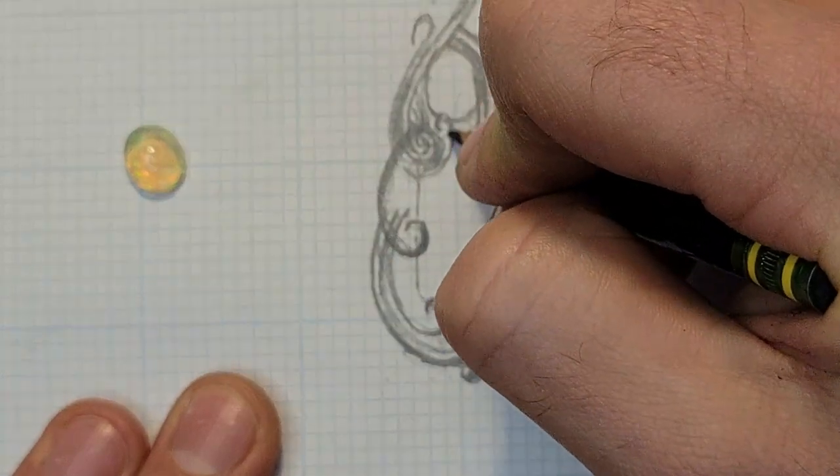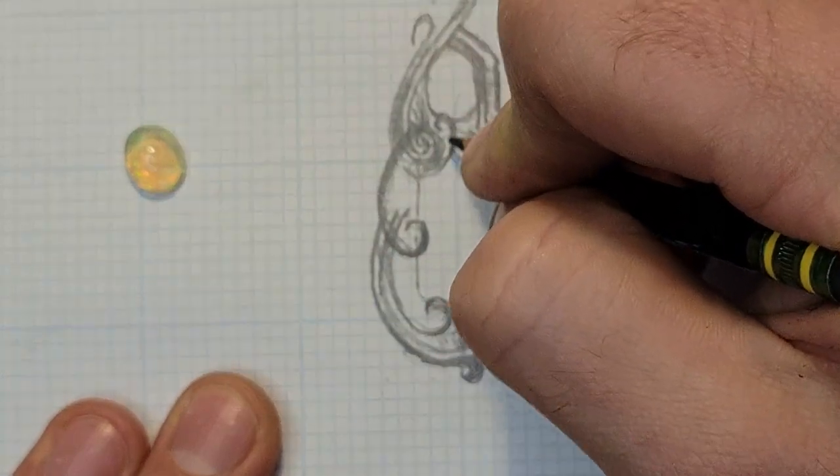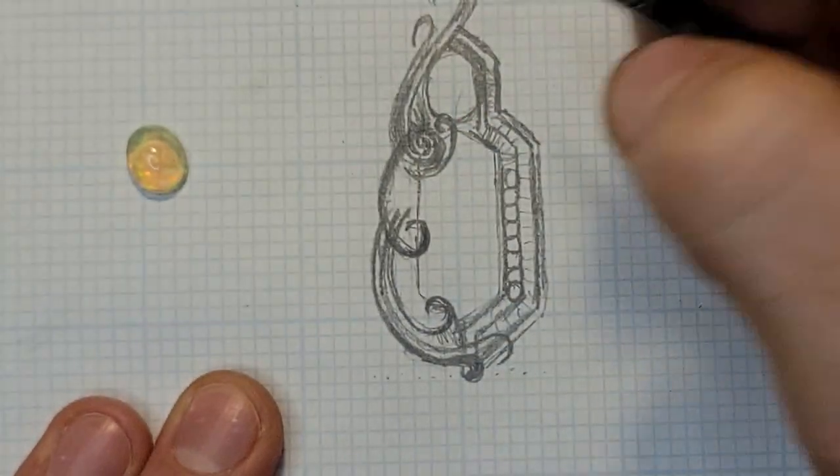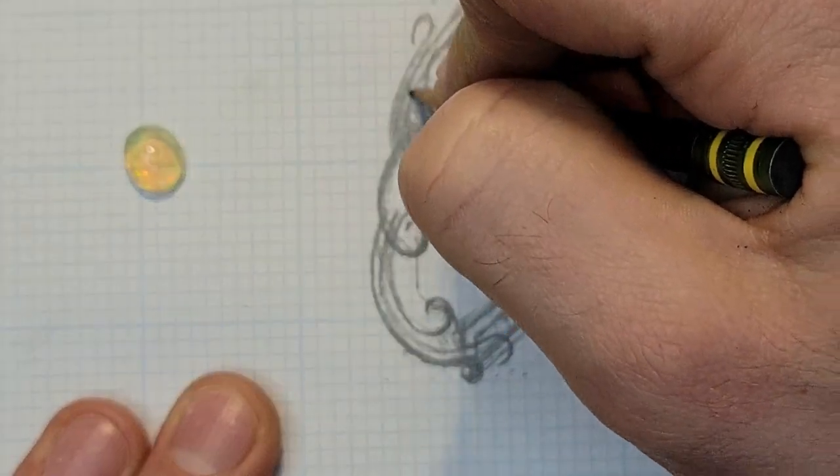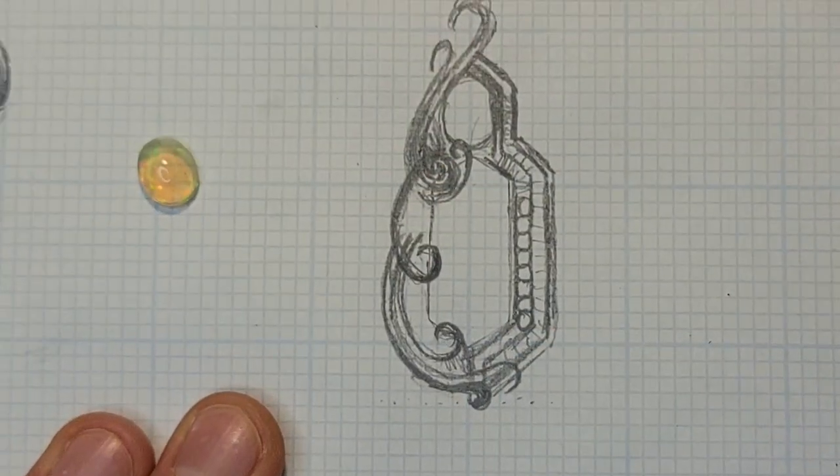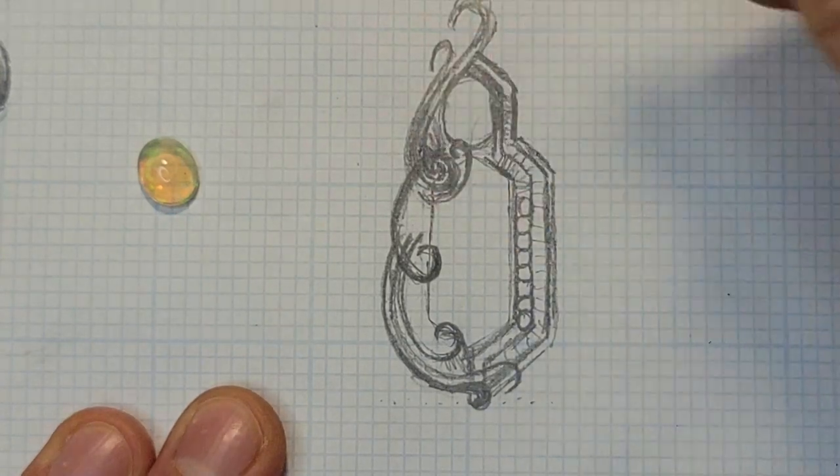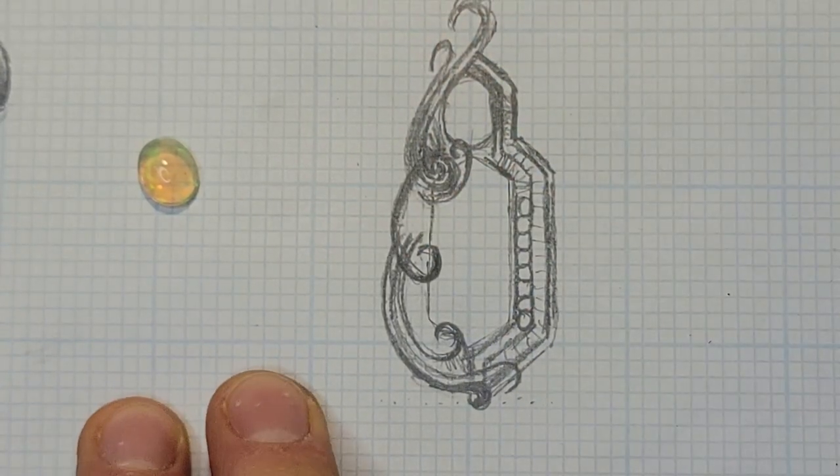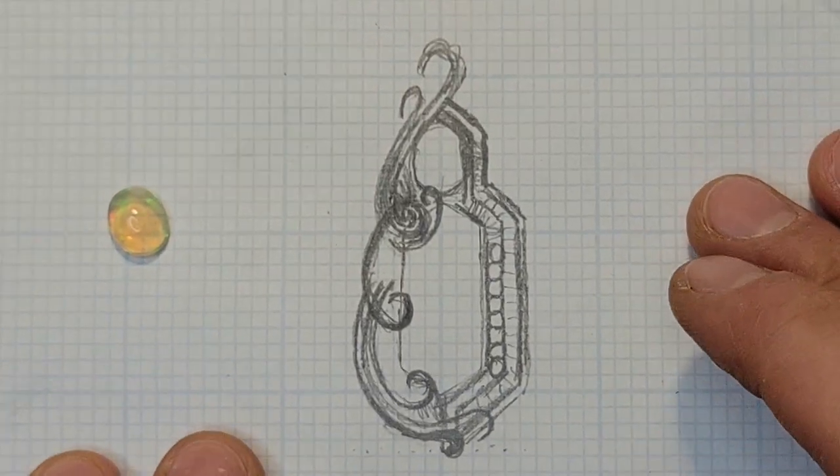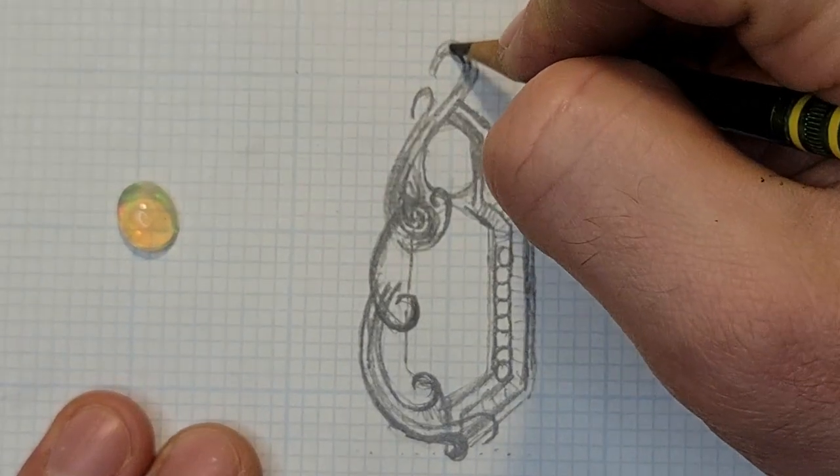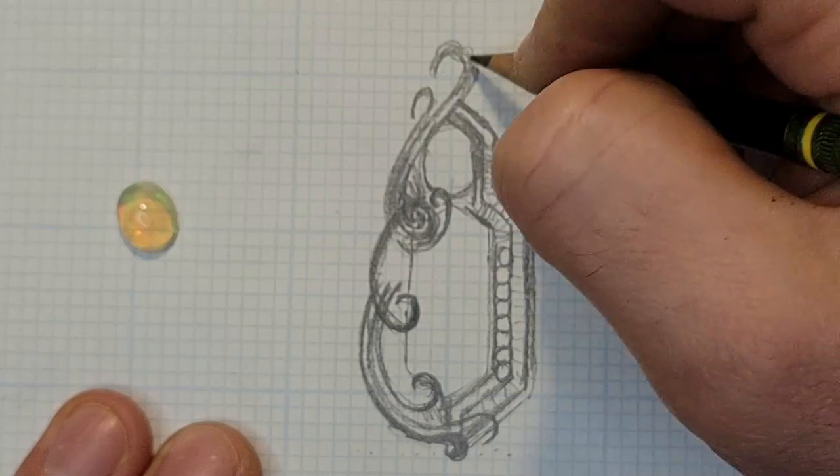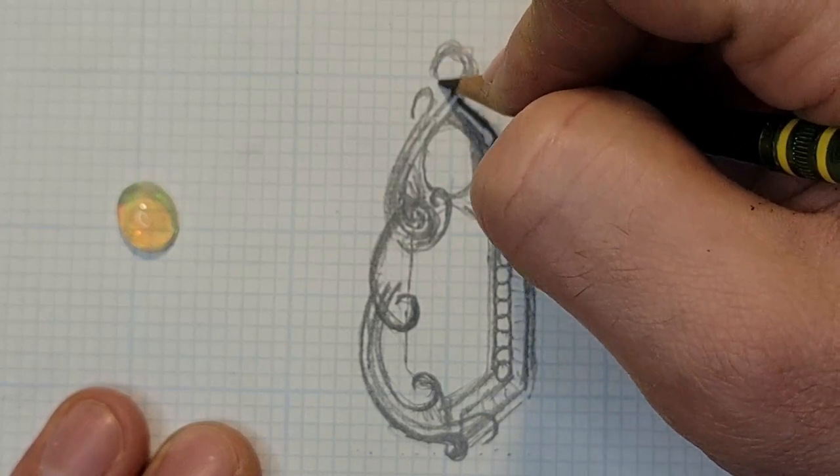And so that basically completes the setting for the opal and starts to finish off the setting for the Super 7. We'll also have some 21 gauge running on the tech side of the Super 7 cabochon, so on the right side of this design as you see here. You'll see all of that when we get into the detailing videos of this start to finish design.